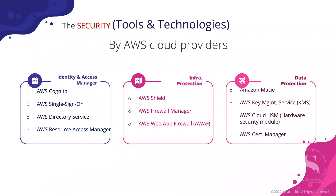There are lots of tools and services available in the marketplace. Talking about some examples from the AWS cloud provider, there are three types of security that can be implemented throughout the system design. One is Identity and Access Management. These are segregated into three categories: identity protection, infrastructure protection, and data protection.